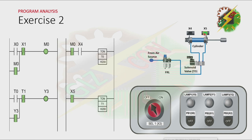Now the cylinder reaches the fully extended position. That will make X5 to turn on and X4 to turn off. Because X4 is off, T0 is off right now. And that will cause the normally open contact of T0 to turn off. But because there is a latching, Y3 will not turn off.